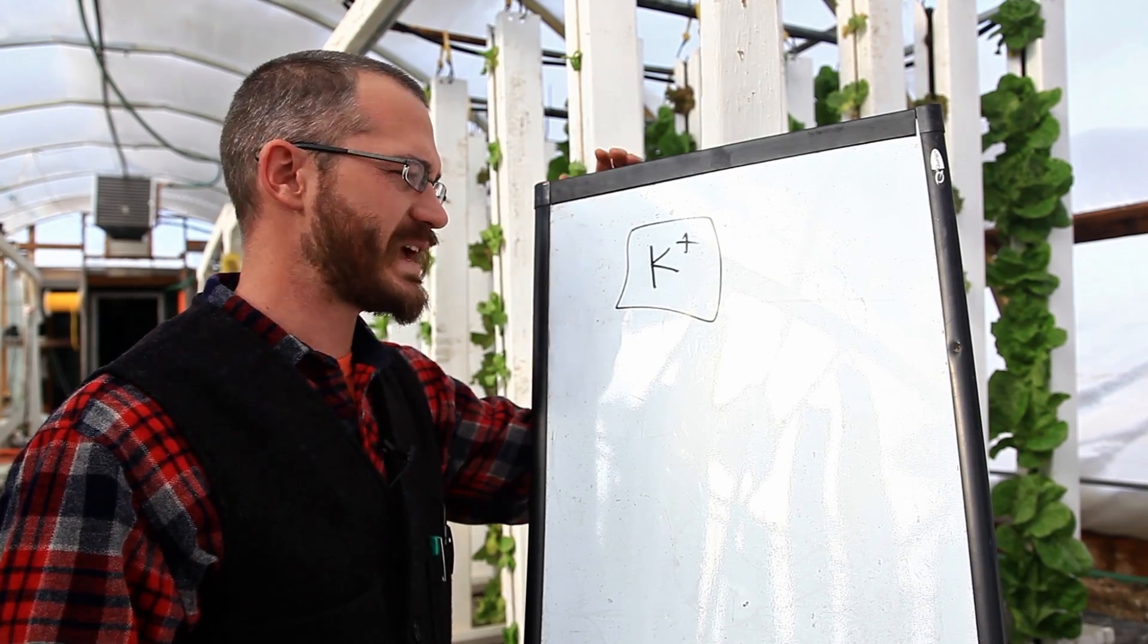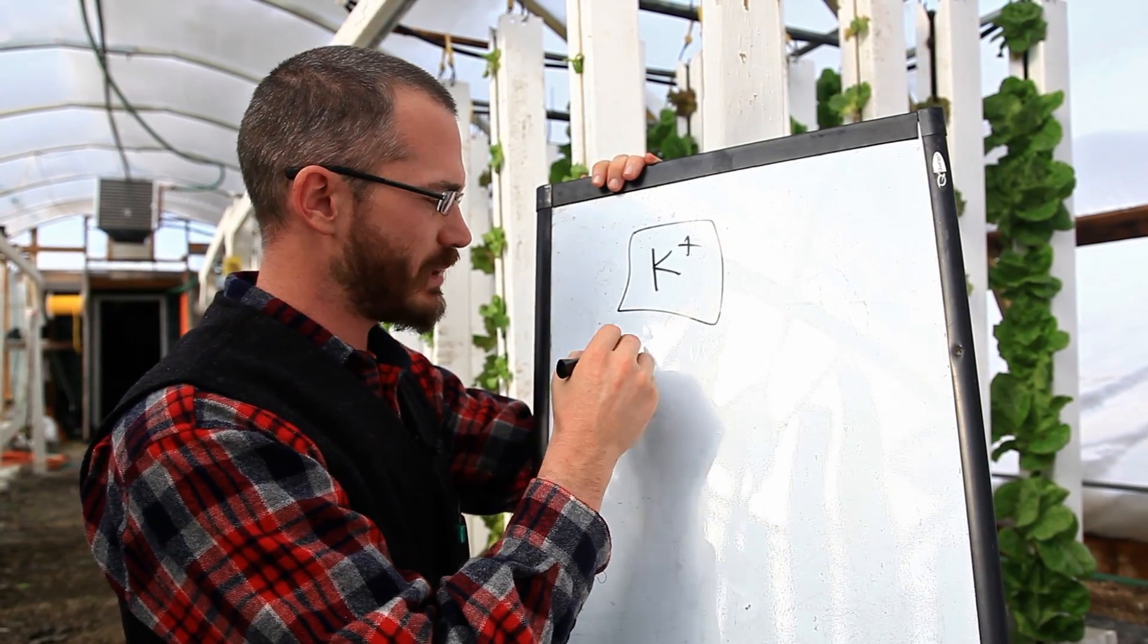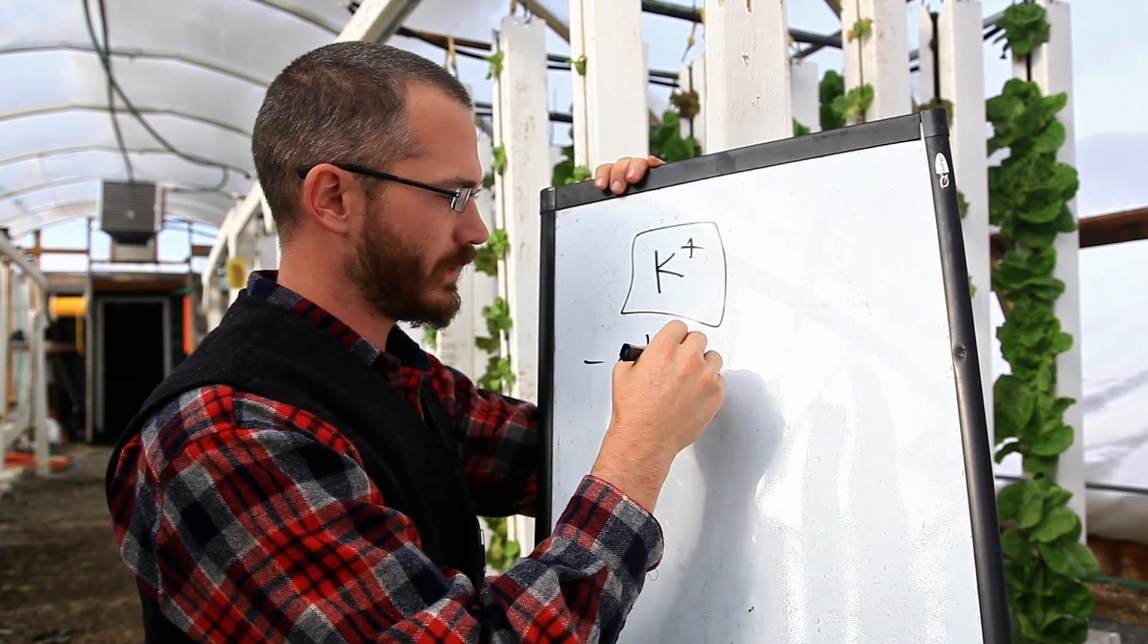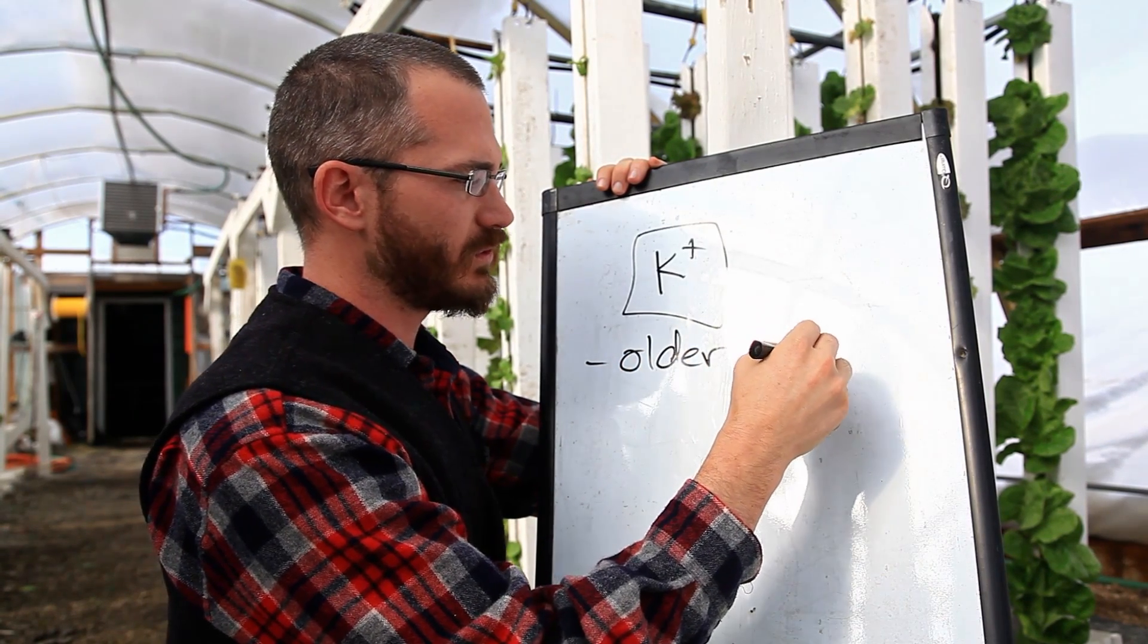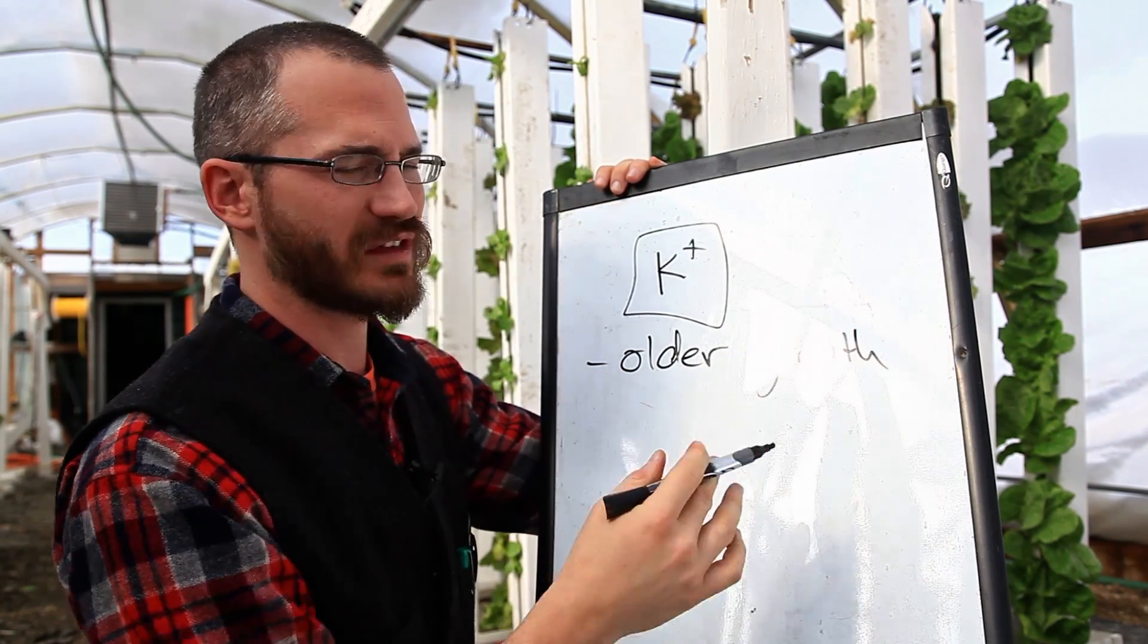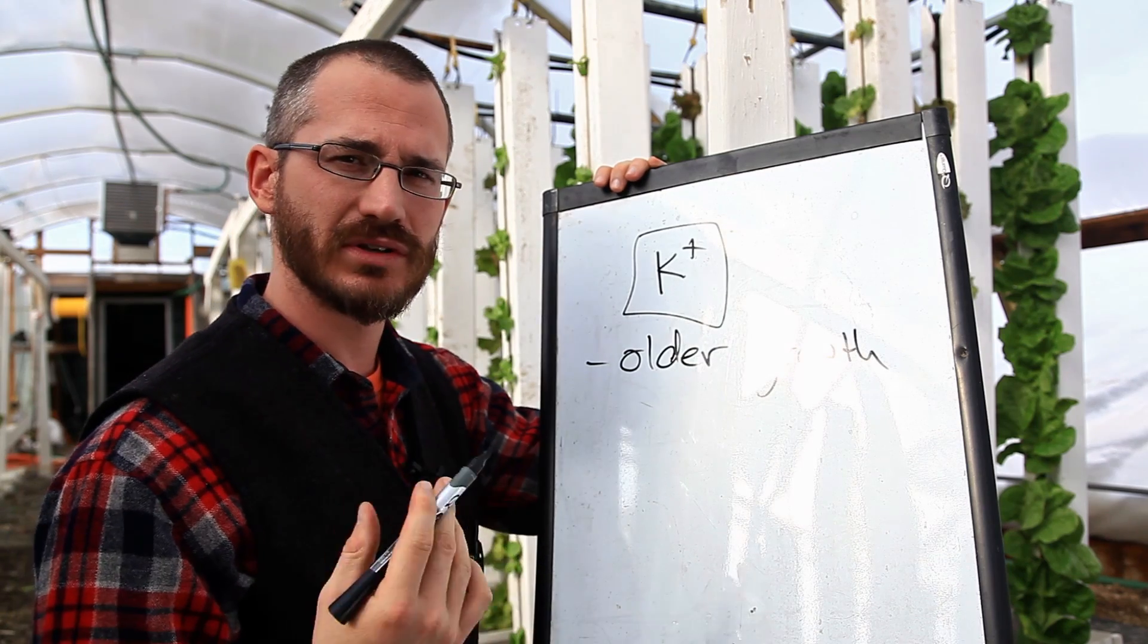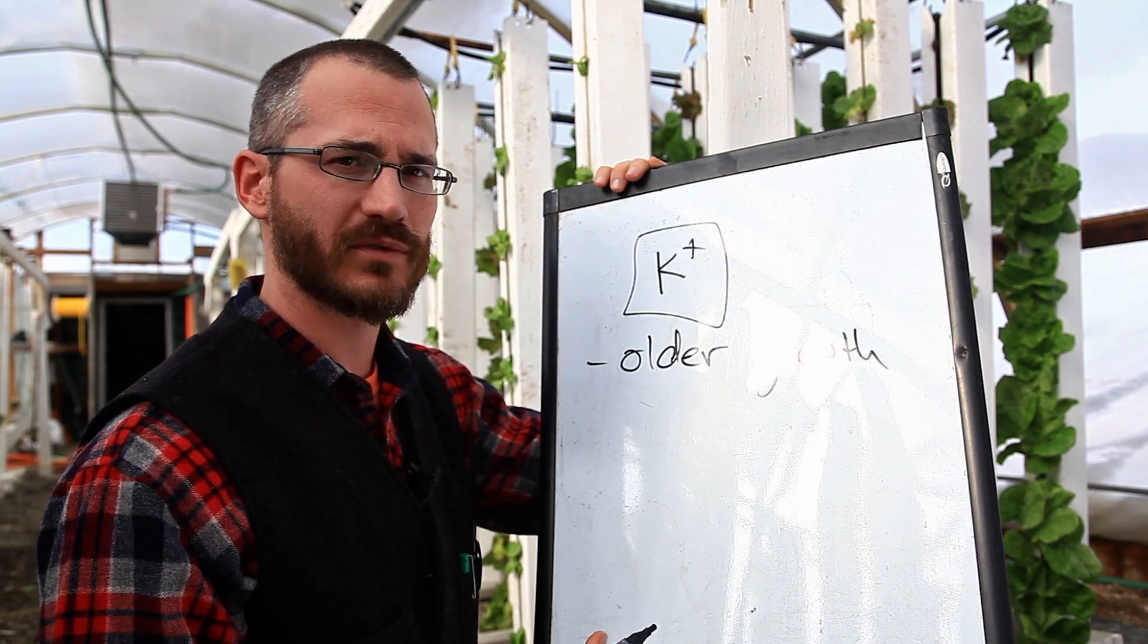So when we are potassium deficient, we start to see them in older growth. The older parts of the plant start to show the nutrient deficiency symptoms first.